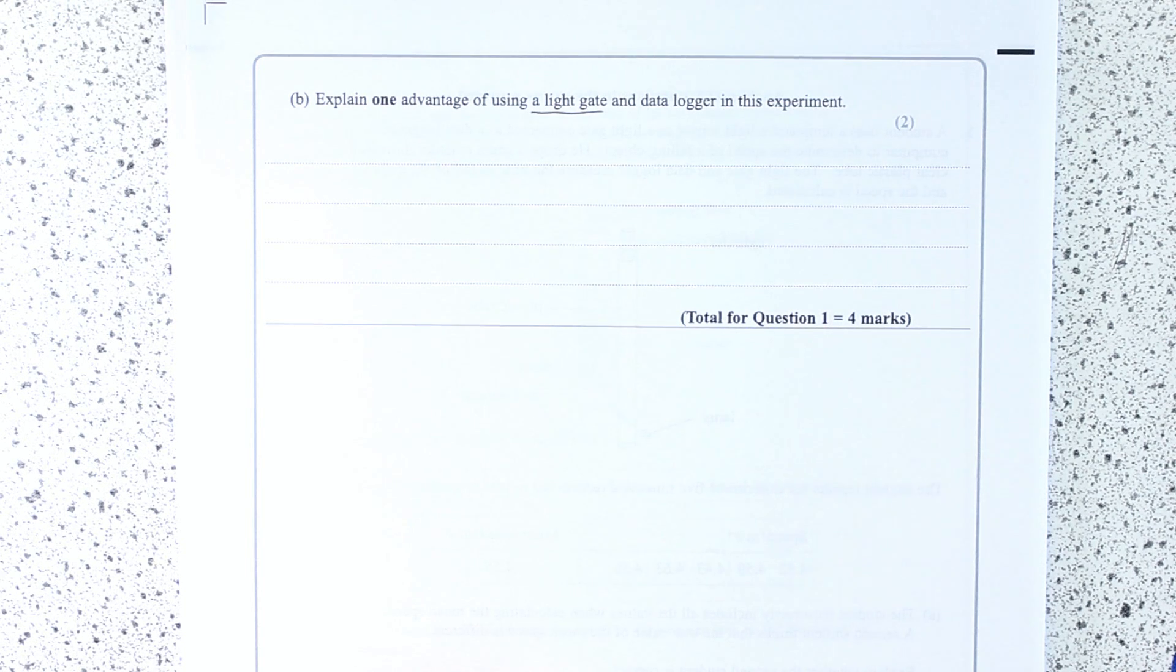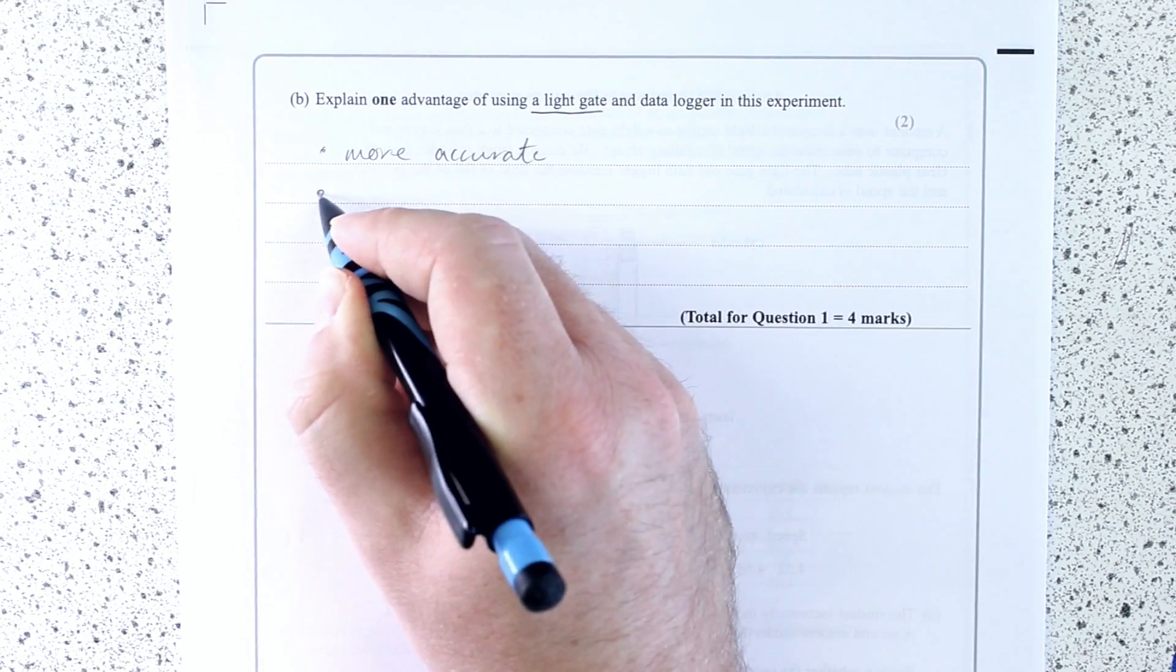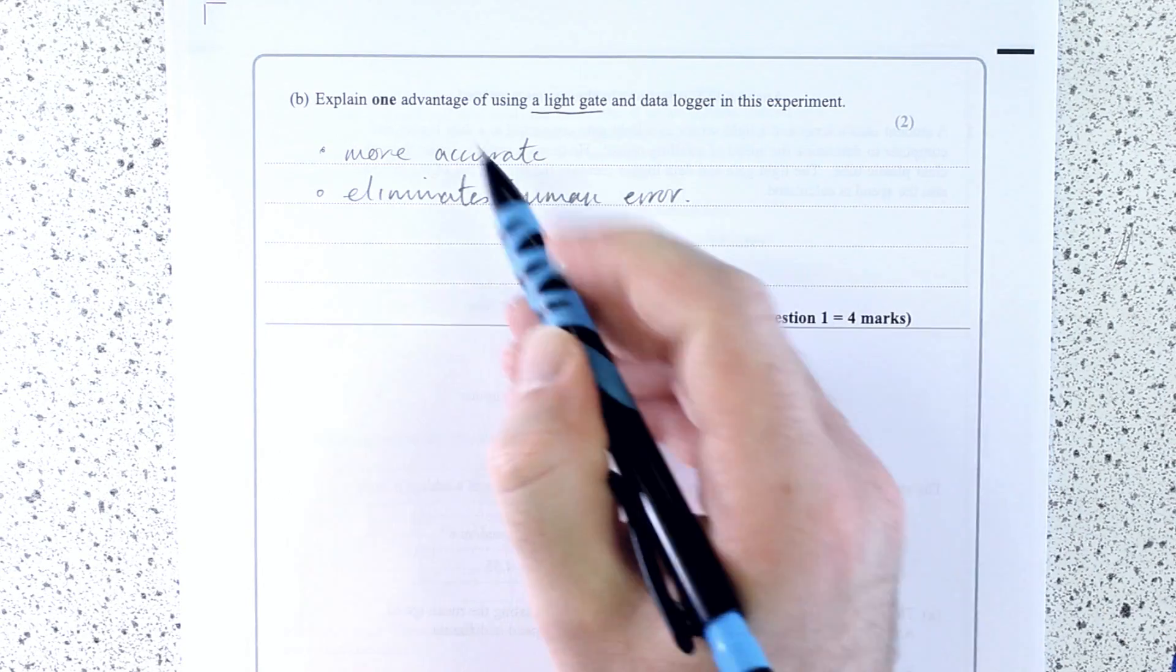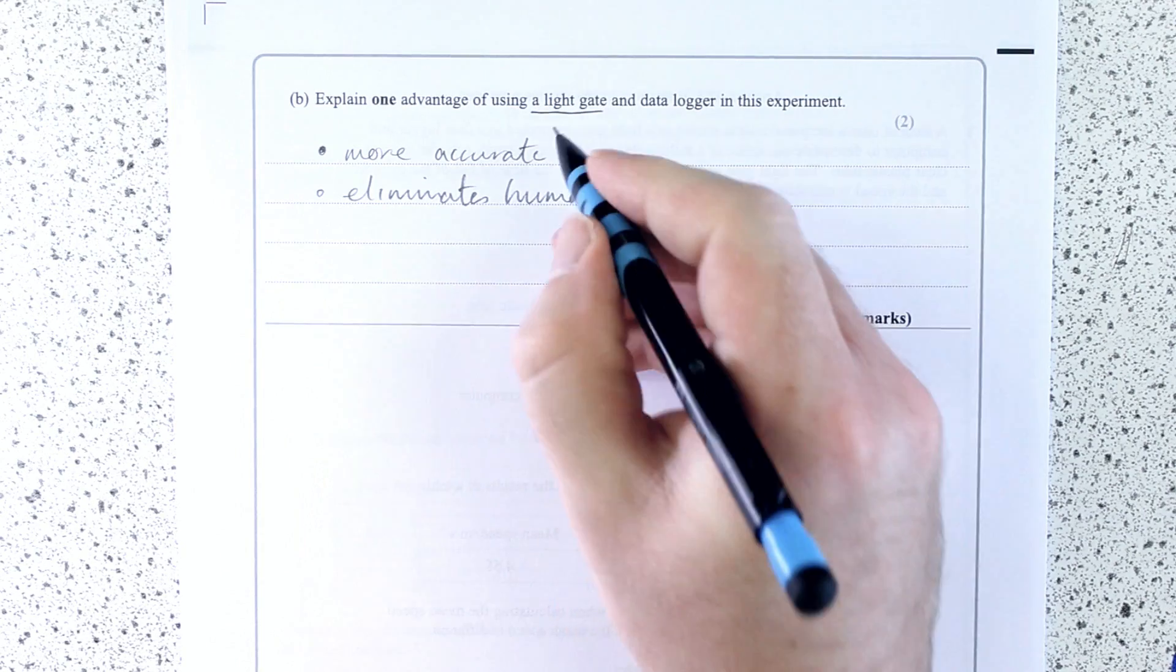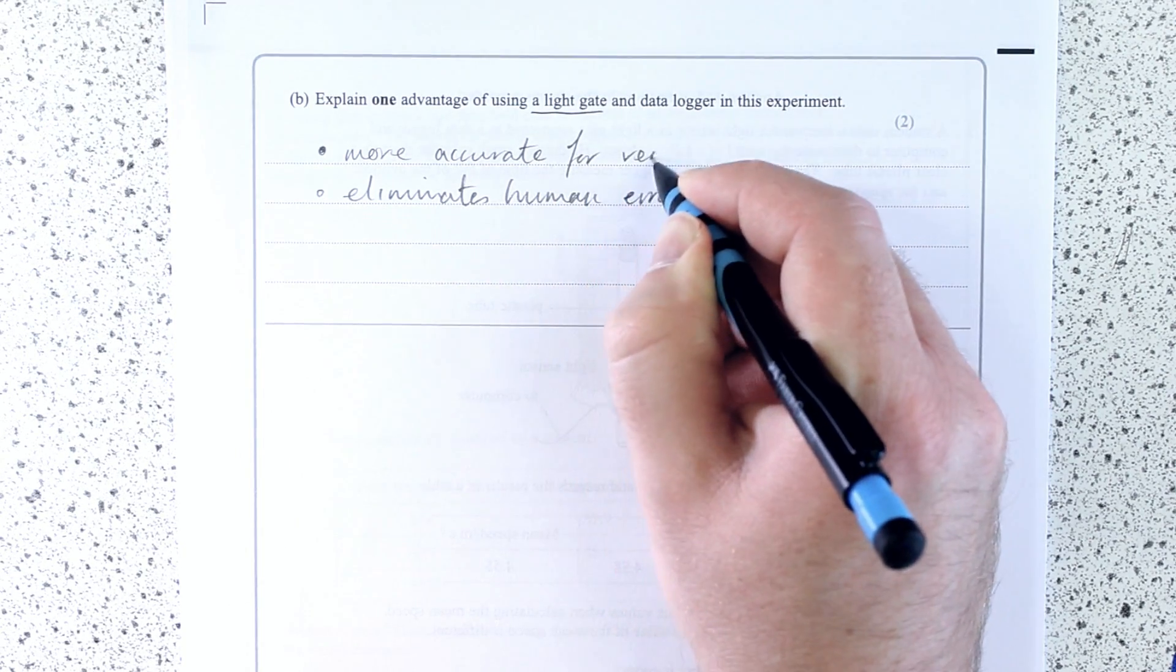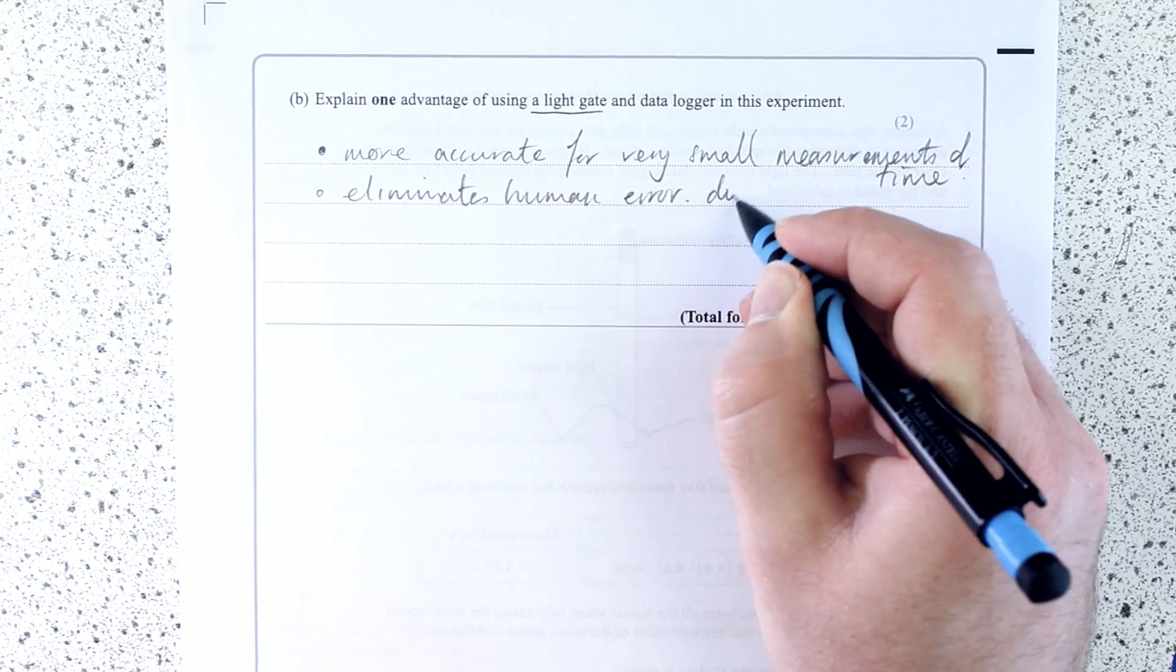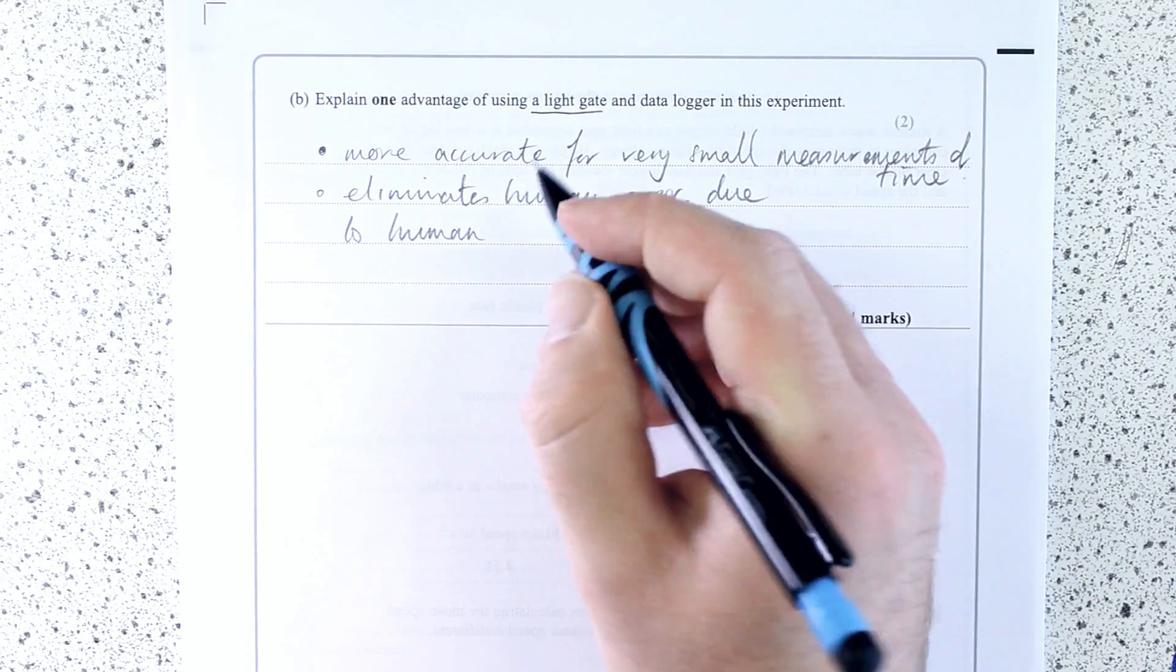So a light gate, not just as simple as more accurate and eliminates human error. I might accept these on GCSE papers, but not for A-level. So these wouldn't quite get the marks. More accurate for very small times eliminates human error due to human reaction speed or reaction time.